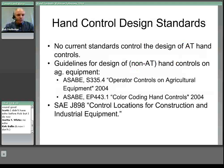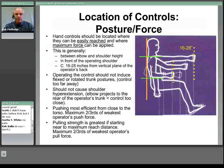There are no specific current ergonomic standards for the design of AT hand controls in agriculture or any other setting. General guidelines do exist for hand controls on agricultural equipment, such as ASABE S335-4, Operator Controls on Agricultural Equipment, and ASABE EP4431 relating to the colour coding of hand controls. Further insight, though not specific to agriculture, can be gained from standards devised by the Society of Automotive Engineers.